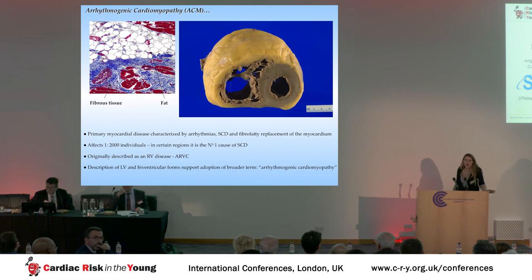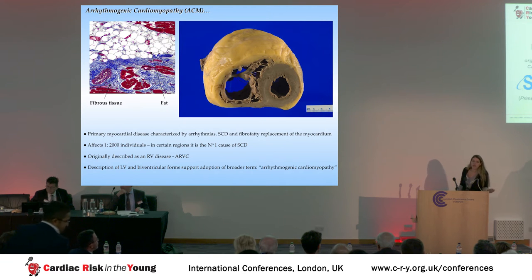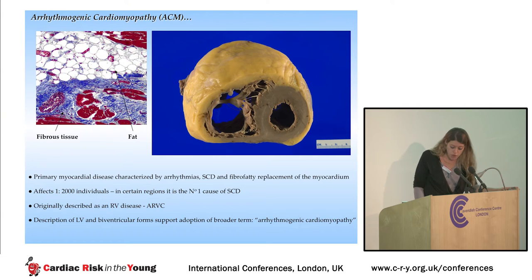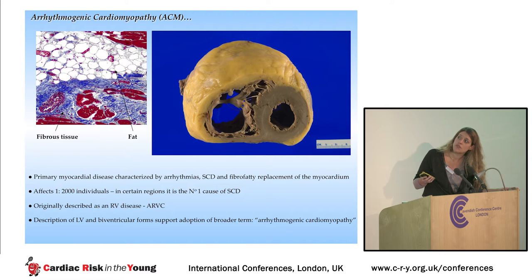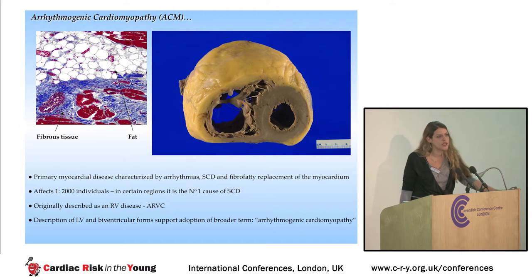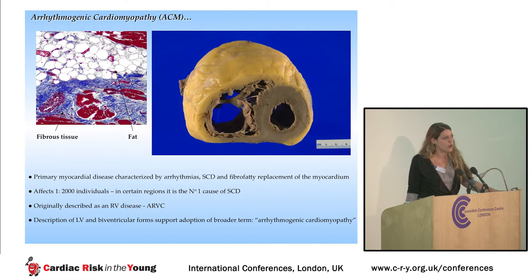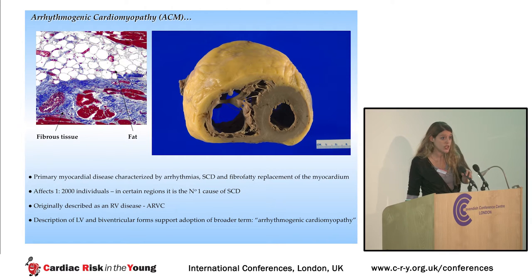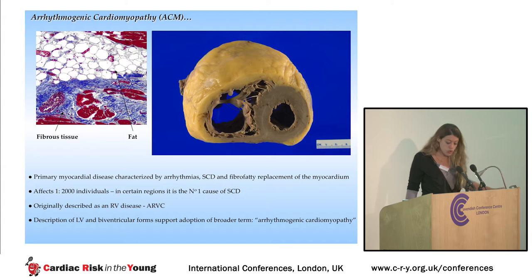This is a primary myocardial disease that, as most of you should know, is characterized clinically by frequent ventricular arrhythmias and sudden cardiac death, and pathologically by the gradual degeneration of cardiac myocytes and their replacement with fat and fibrous tissue. It affects, on average, 1 in 2,000 individuals in the general population, although in certain regions of the world it is the number one cause of sudden death amongst young individuals, particularly those engaged in strenuous exercise.